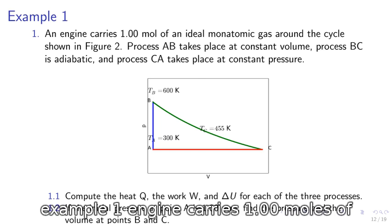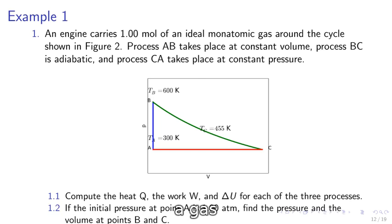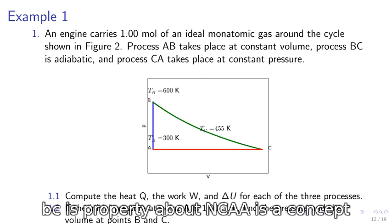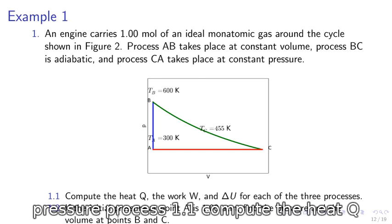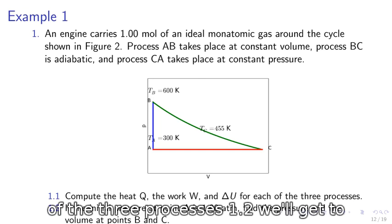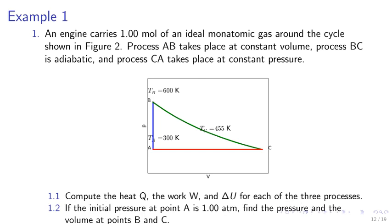Example 1. An engine carries 1.00 moles of an ideal monatomic gas around the cycle shown in Figure 2. AB is constant volume, BC is adiabatic, and CA is constant pressure process. 1.1: Compute the heat Q, the work W, and delta U for each of the three processes.